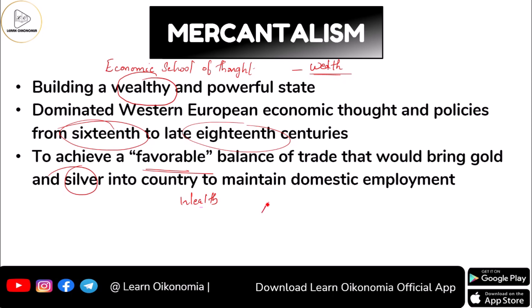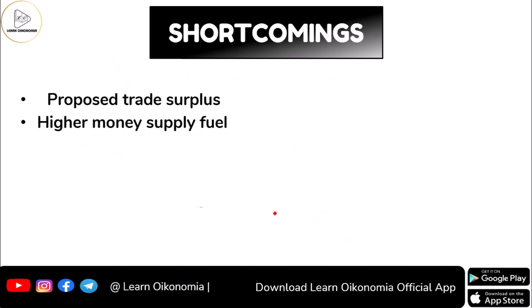A country that possesses more gold and silver is considered more rich. If you have two nations — nation A and nation B — nation B is considered more rich as per the Mercantilist school of economic thought. Now let's have a look at the shortcomings.